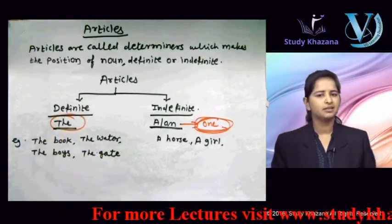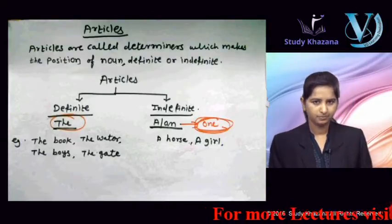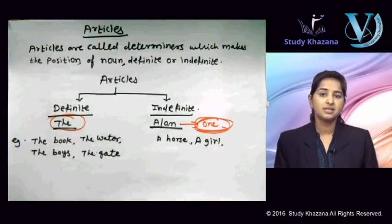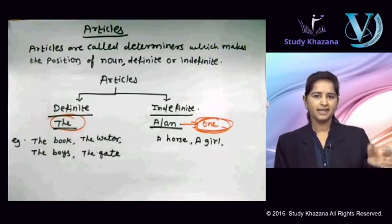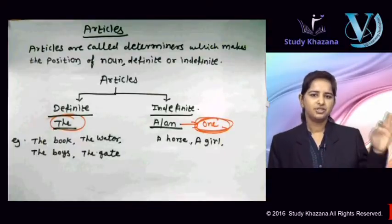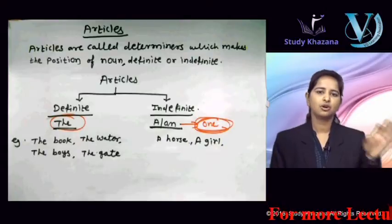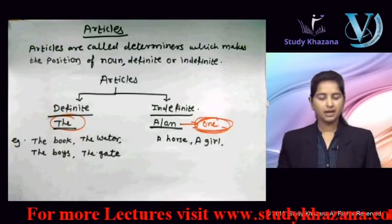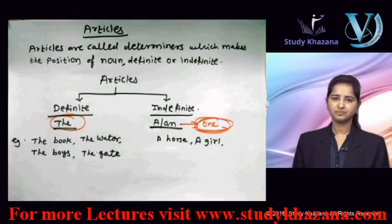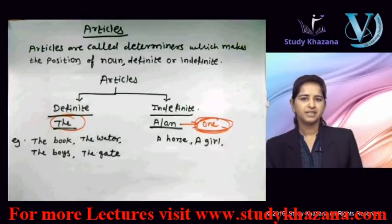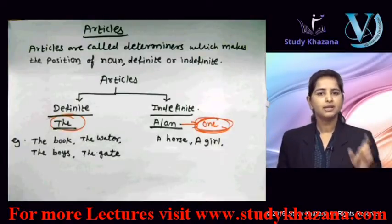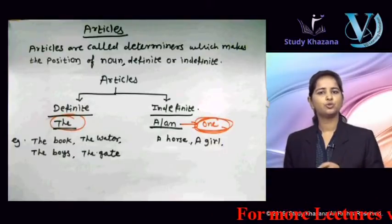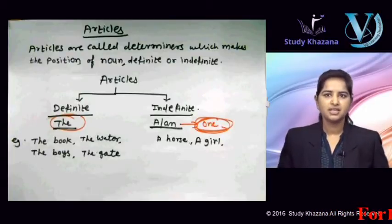Ab pronunciation ki baat karte hain — 'da' ka hai ya 'dhi' ka hai? Iske liye, jab hum word ya noun ki shuruwaat consonant se karein — consonant kaun kaun hote hain? A, E, I, O, U ke alawa jitne alphabets hain unhe hum kehte hain consonants. Vowels 5 hain, consonants 21. 'Dhi' pronunciation tab hoga jab noun ya pronoun ka sound vowel sound pe ho — jaise A, E, I, O, U — in sounds pe hum 'dhi' pronunciation ka use karenge.